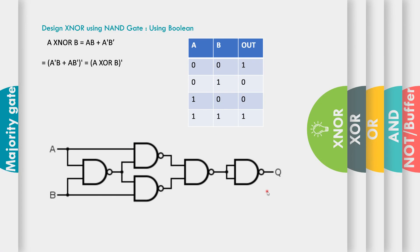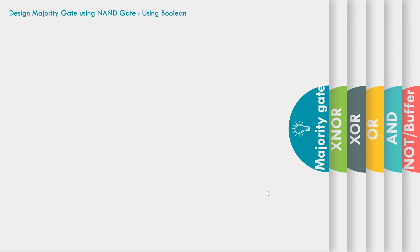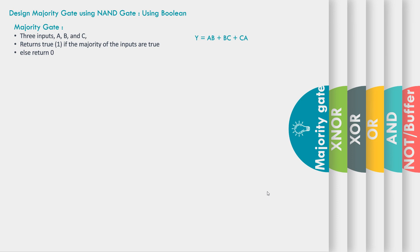Now in the last slide we'll see how we can implement any given boolean expression using NAND gates. We'll understand this with the example of a three-input majority gate. A three-input majority gate returns true if the majority of the inputs are true, otherwise the output is zero. Majority means at least two inputs are one: A·B or B·C or C·A. So Y = A·B + B·C + C·A is the equation of our majority gate.